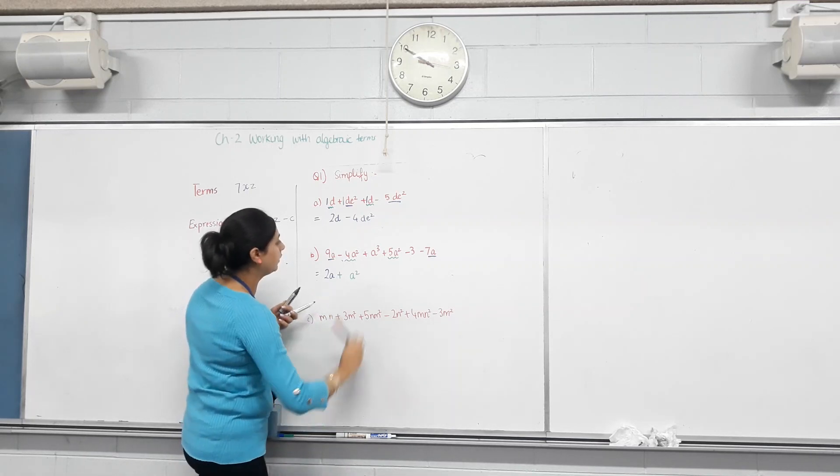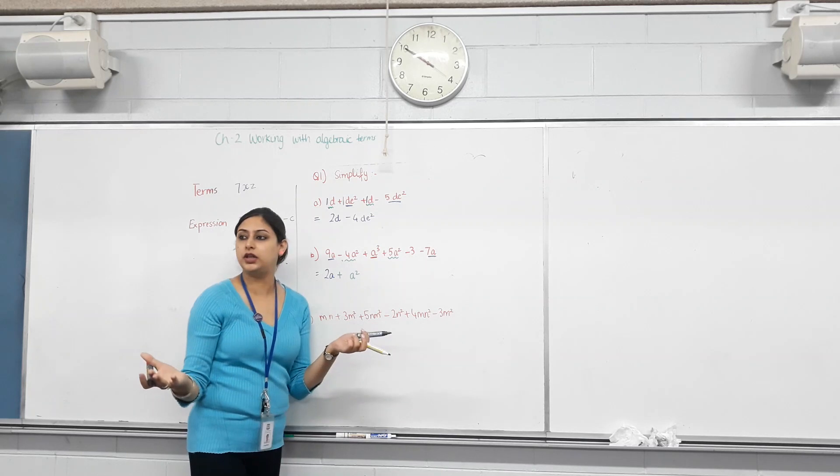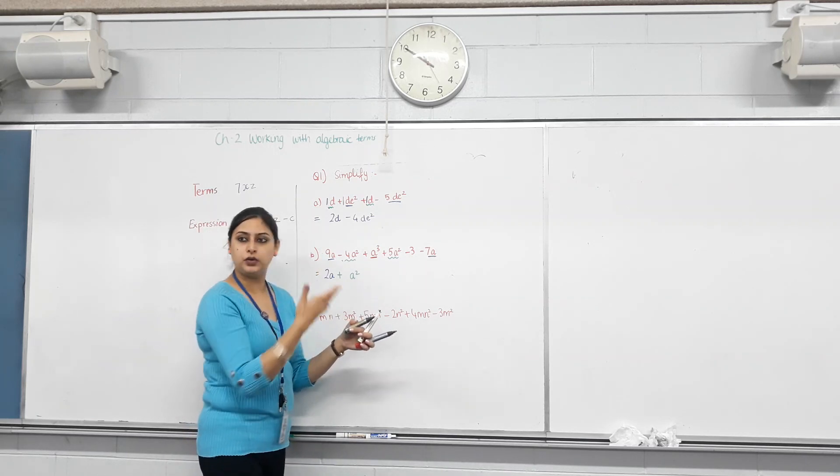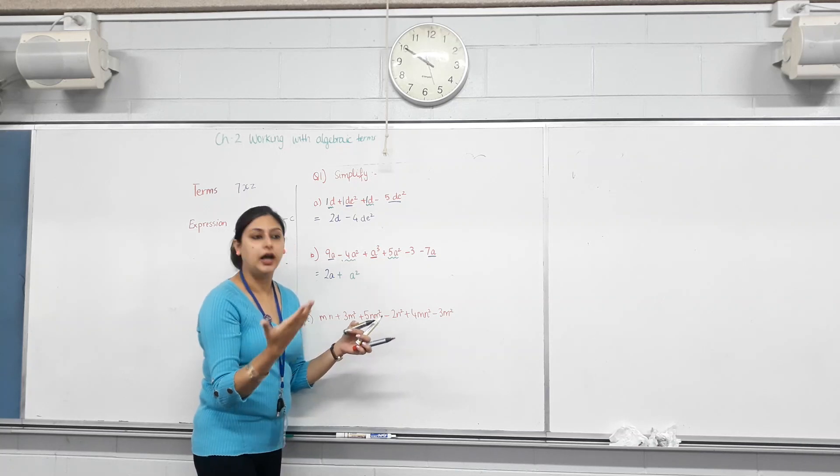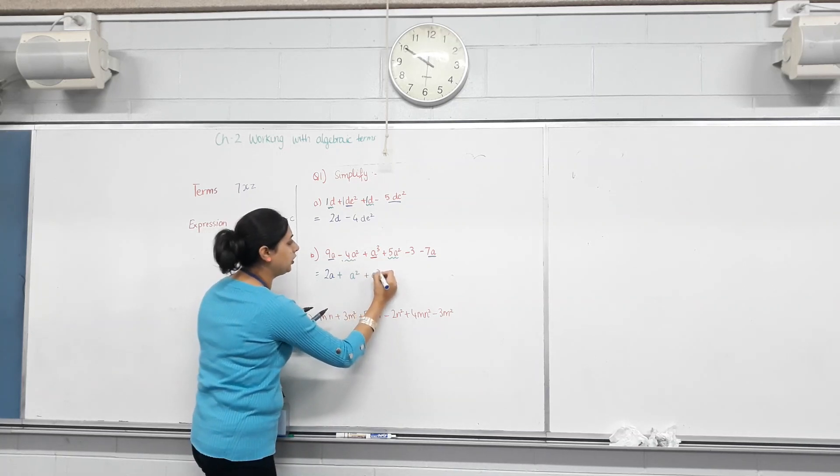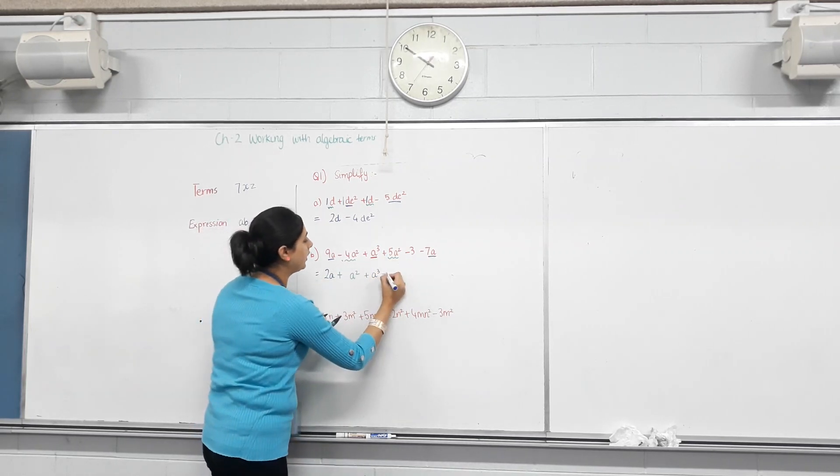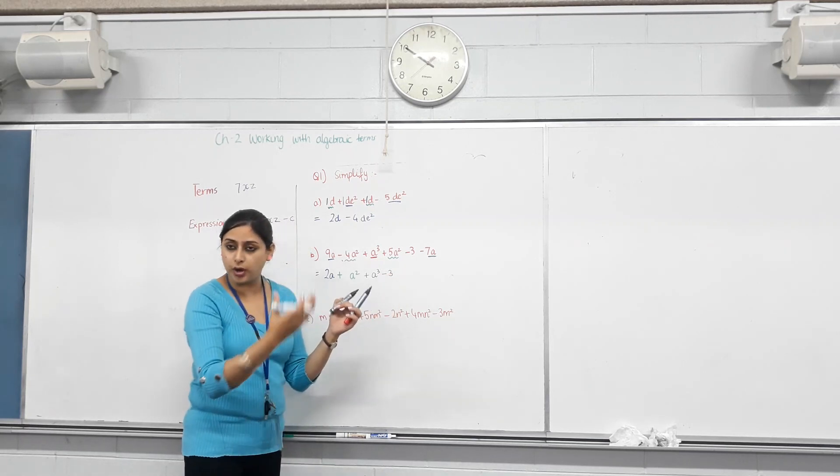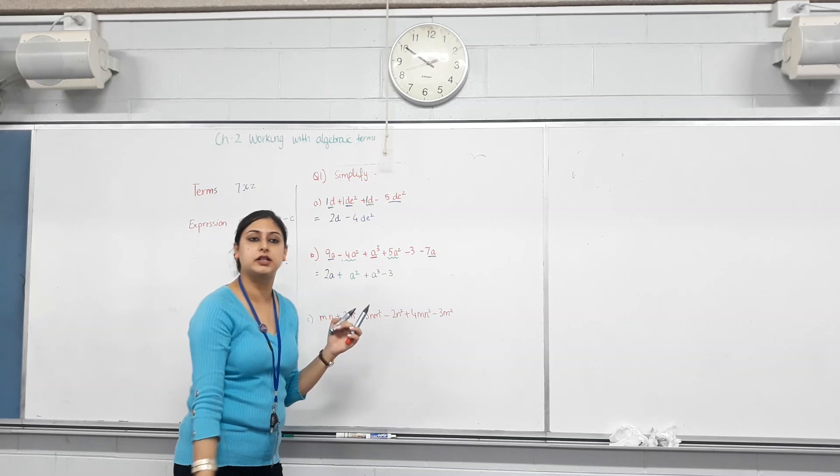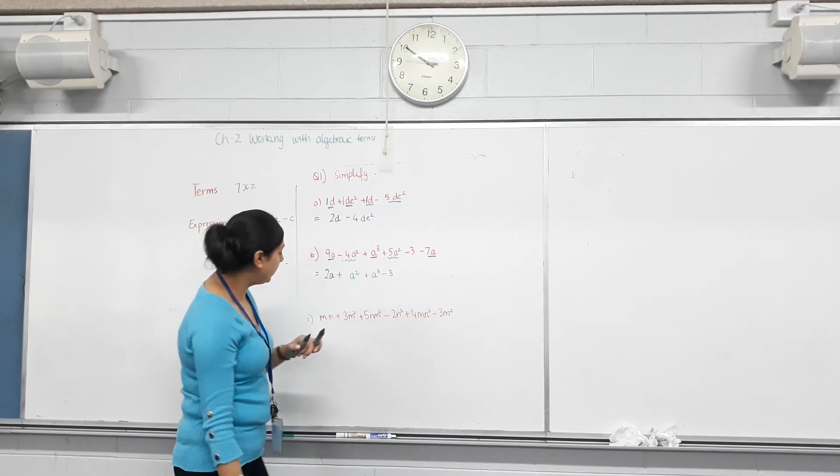Are there any other terms? A cubed. A cubed. But is there another term with A cubed? No. So can I do anything? Do I just stick it off? Do I write it at all? I have to. So just write it as it is. Plus A cubed. Negative three. Again, any other numbers? No. So write negative three as it is. So you can't drop terms. If a term does not have another like term, just write it as it is. You can't do anything to it. Make sense? Final question.